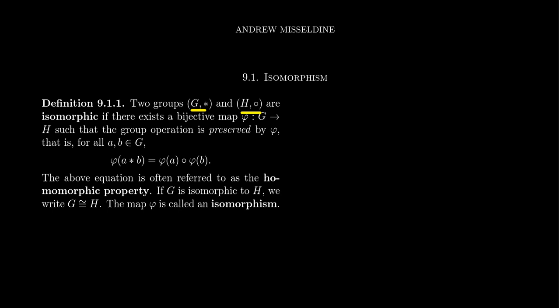The two operations associated to the groups G and H do not necessarily have anything in common — they don't have to both be multiplication or both be addition. They're just two group operations. We say that the groups G and H are isomorphic if there exists a bijection phi which goes from G to H. This map needs to be both injective and surjective, one-to-one and onto. But in addition to being bijective, this function needs to preserve the operations.